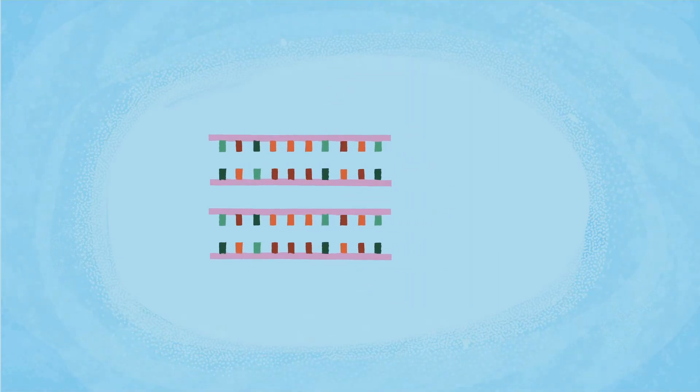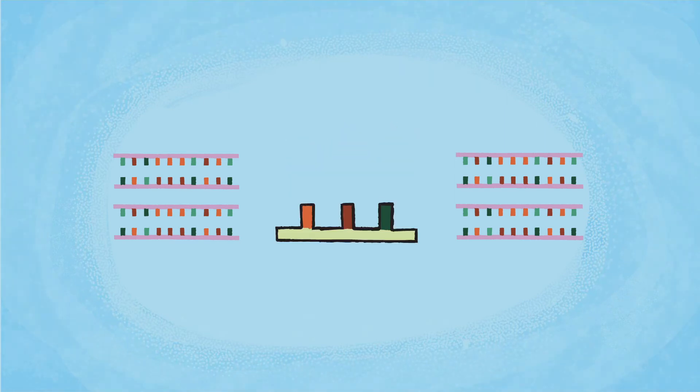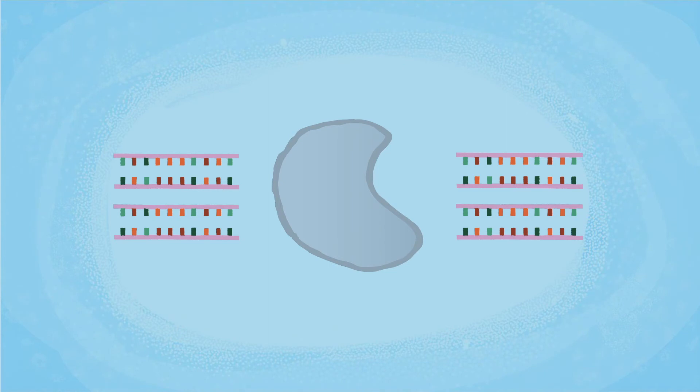The third PCR cycle doubles the number of DNA molecules produced in the second cycle. First, DNA is denatured, then primers anneal to the single strands, and DNA polymerase synthesizes complementary strands.